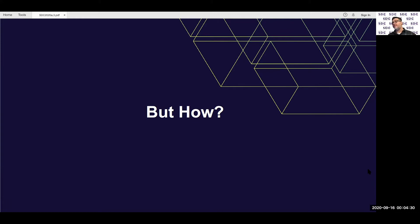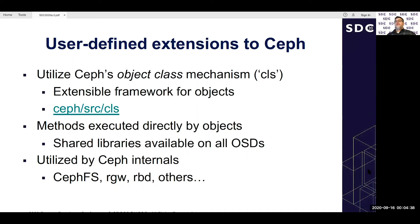Since this is a storage developer conference, I'll get into details and code snippets. We utilize the object class mechanism, also called CLS — an extensible framework for objects. Think of these as user-defined read/write methods injected into the system, located at source/cls in the tree. These classes and methods execute directly on objects, sitting inside shared libraries distributed to all OSDs, so any OSD server can execute them on a locally stored object. CephFS, RADOS gateway, and others use CLS extensively — it's a robust interface.